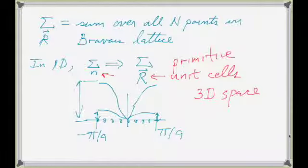We're summing over all primitive unit cells in 3D space — the fundamental repeat unit that defines the lattice. When you see sums over R's, it's the sum over all primitive unit cells in 3D space. Each unit cell contains two atoms: an A atom and a B atom, just like in your homework, but now they're in 3D space rather than a line.